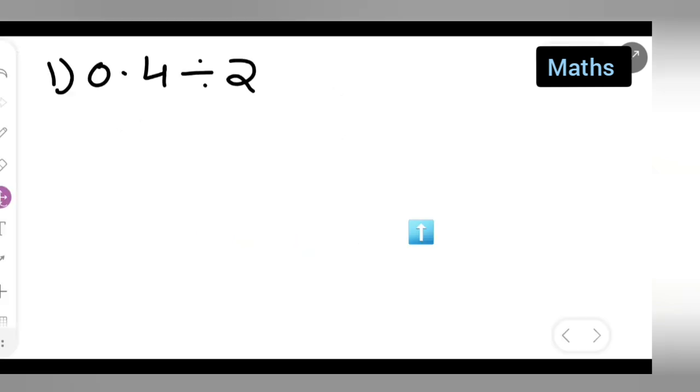So let us see how to find this. First, write down 0.4 divide by 2. After that you will write this.